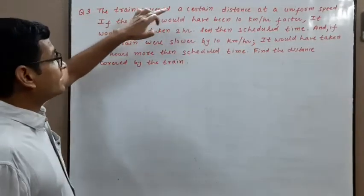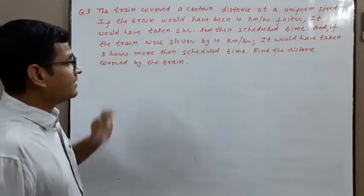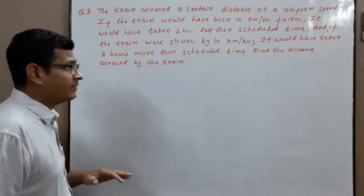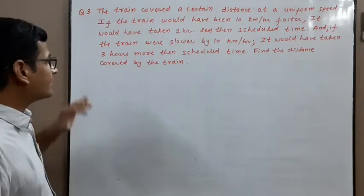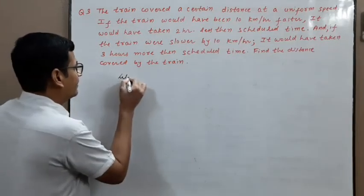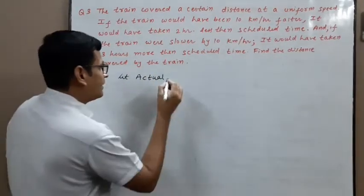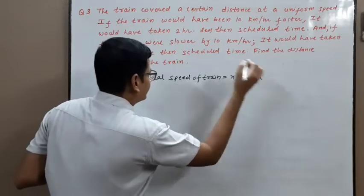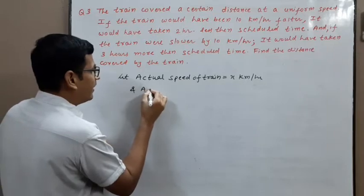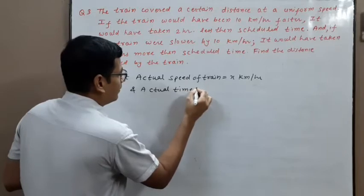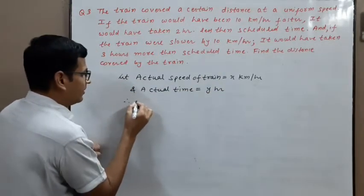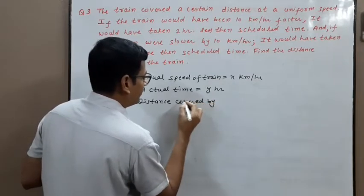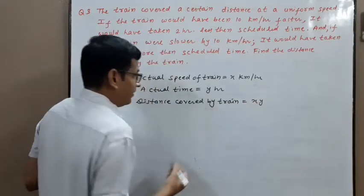Next problem. A train covers a certain distance at uniform speed. If the train were 10 km/hr faster, it would take 2 hours less. If the train were slower by 10 km/hr, it would take 3 hours more. Find the distance covered by the train. Let actual speed equal X km/hr and actual time equal Y hours. Therefore distance covered by train equals XY km.